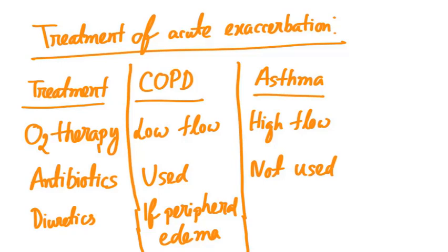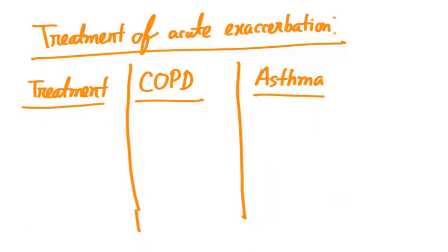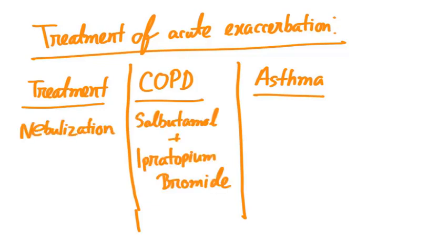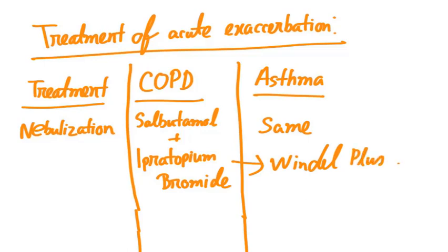Since COPD has extra-pulmonary manifestations including edema, diuretics are used to manage it, but in asthma diuretics are not used. Despite many differences, there are also similarities in treatment: for nebulization, both asthma and COPD use salbutamol and ipratropium bromide — this combination is called Combivent. Glucocorticoids are also used in both COPD and asthma.